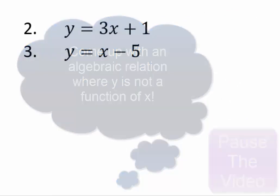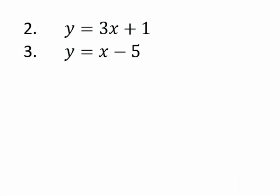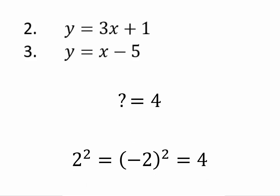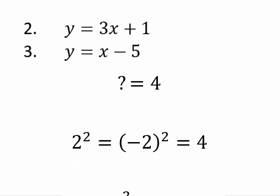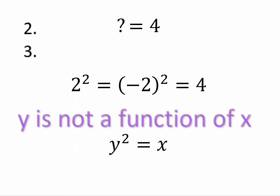Assuming you've come back, what did you come up with? Even if you were unsuccessful, that process of trying will pay you great dividends. I can think of: let's say the input is four. I need to produce two outputs. So x is four and x equals y squared will do that. Because when y is 2, two squared is 4, and when y is negative 2, negative two squared is also 4. So y squared equals x is an algebraic relation where y is not a function of x.